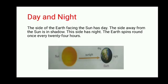Look at this picture. The side of the Earth facing the Sun has day — that bright side which is facing the Sun has daytime. The other side which is darker is away from the Sun and is in shadow — that side has night. The Earth spins around once every 24 hours, and that's how day changes into night and night changes into day. This is the rotation which causes day and night.